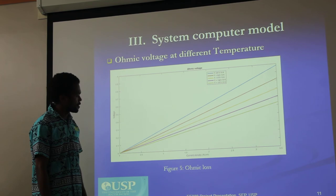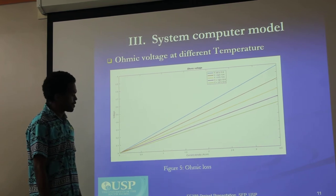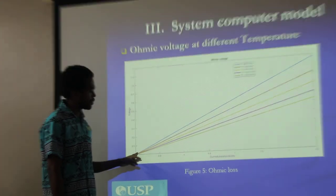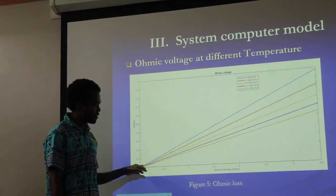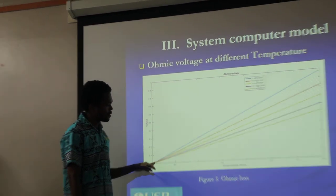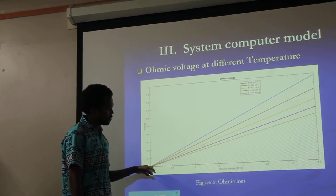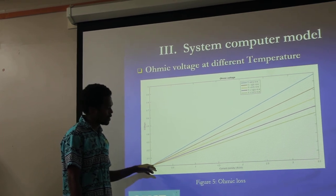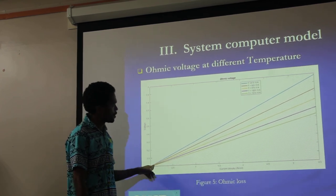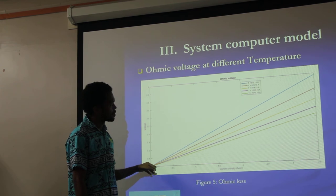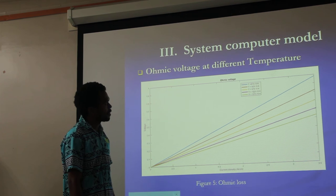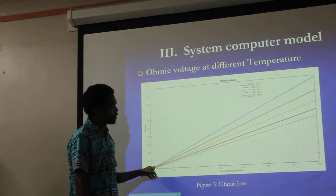Another type of loss is the ohmic loss. This loss is due to the internal resistance of the electrons that flow inside the cell. This loss has a linear relationship with the current density, as shown in this figure. Similarly, this loss has been simulated at various temperatures.